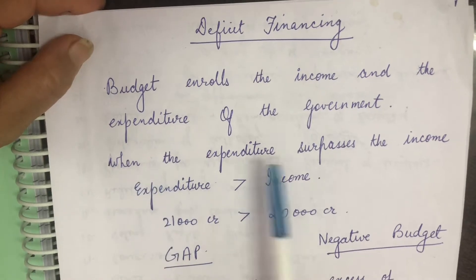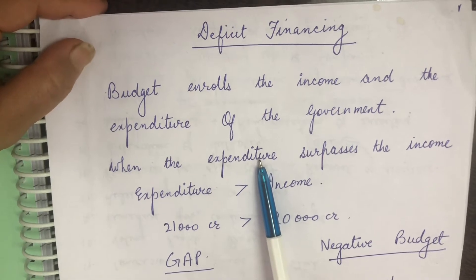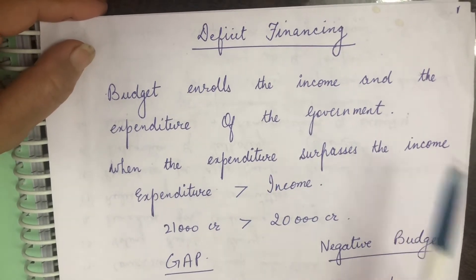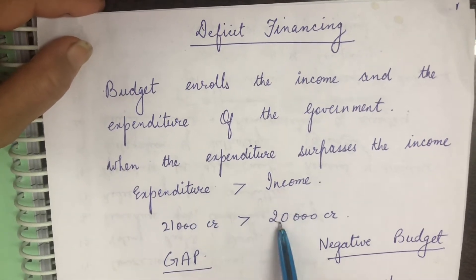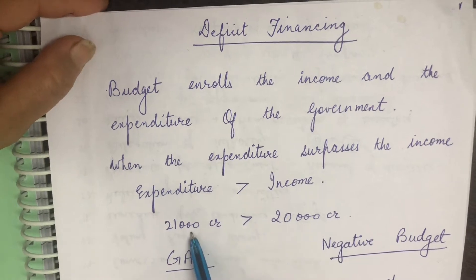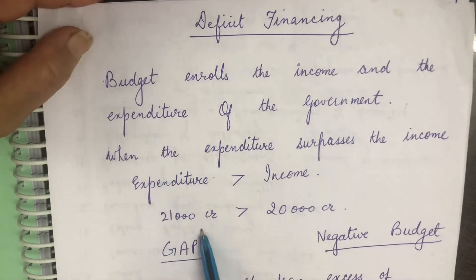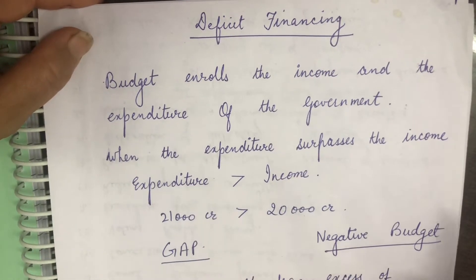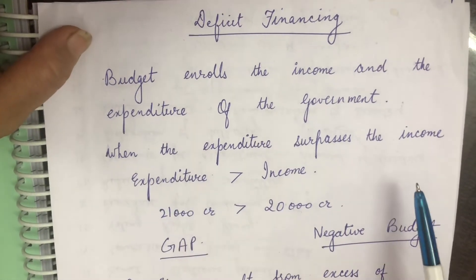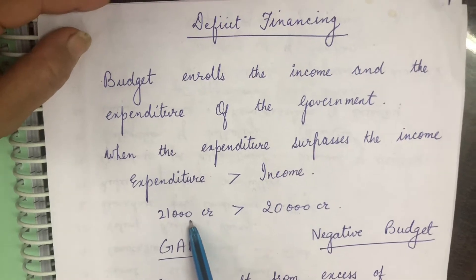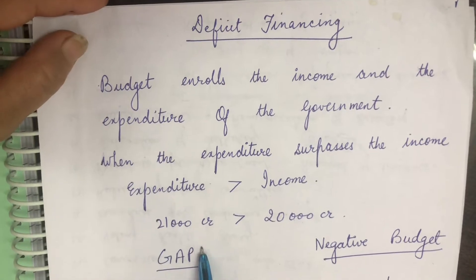When the expenditure surpasses the income, sometimes expenditure is more and income is less. For example, expenditure is 21,000 crore and income is 20,000 crore. So expenditure is more, income is less, and this creates a gap. If it were the reverse, with income of 21,000 and expenditure 20,000, there would be no problem. When expenditure is more and income is less, automatically a gap is created.